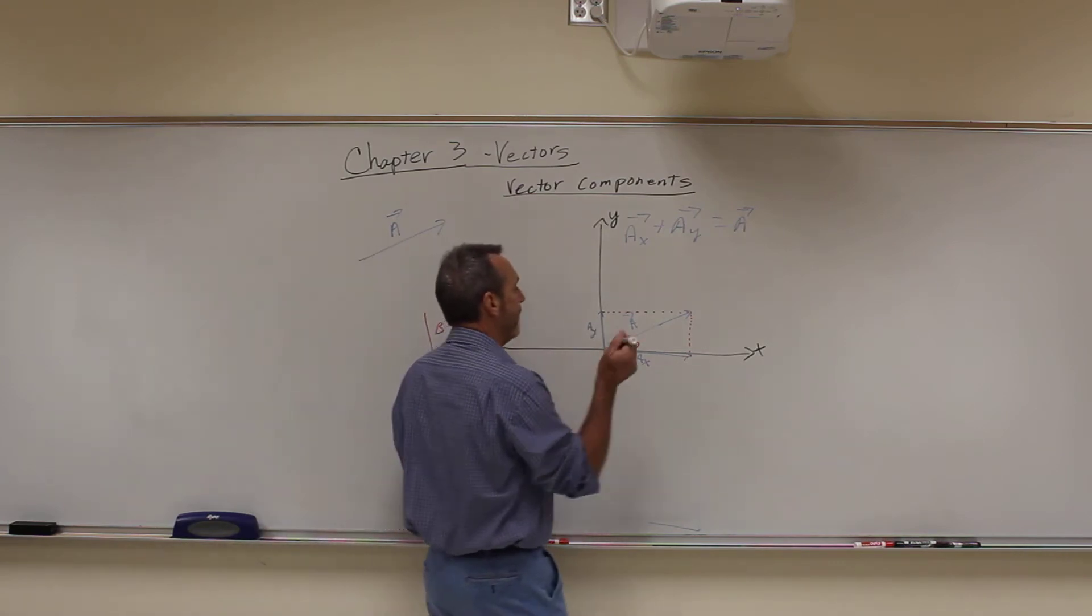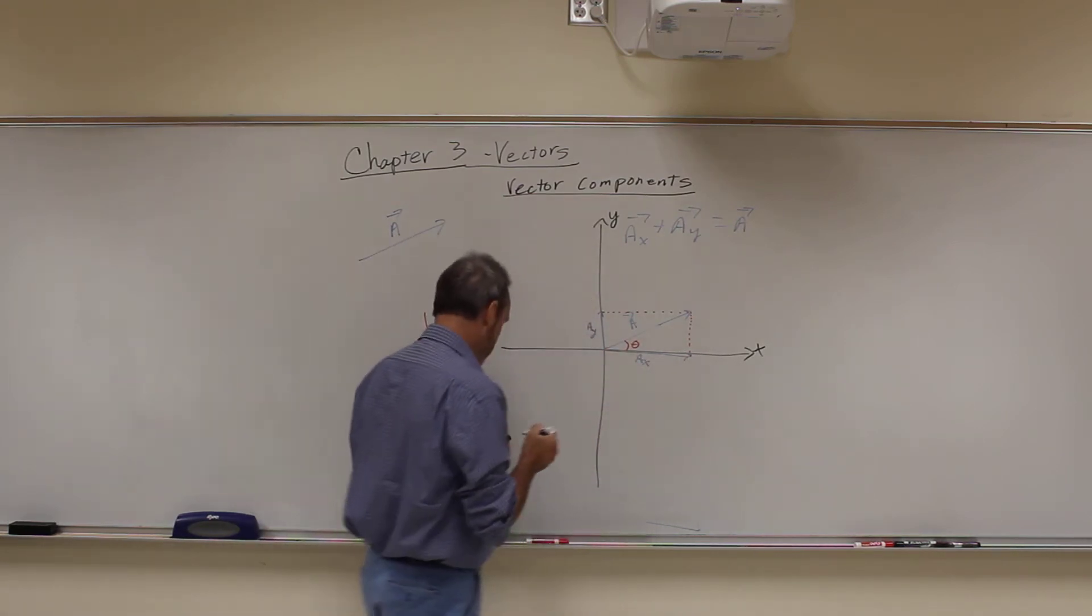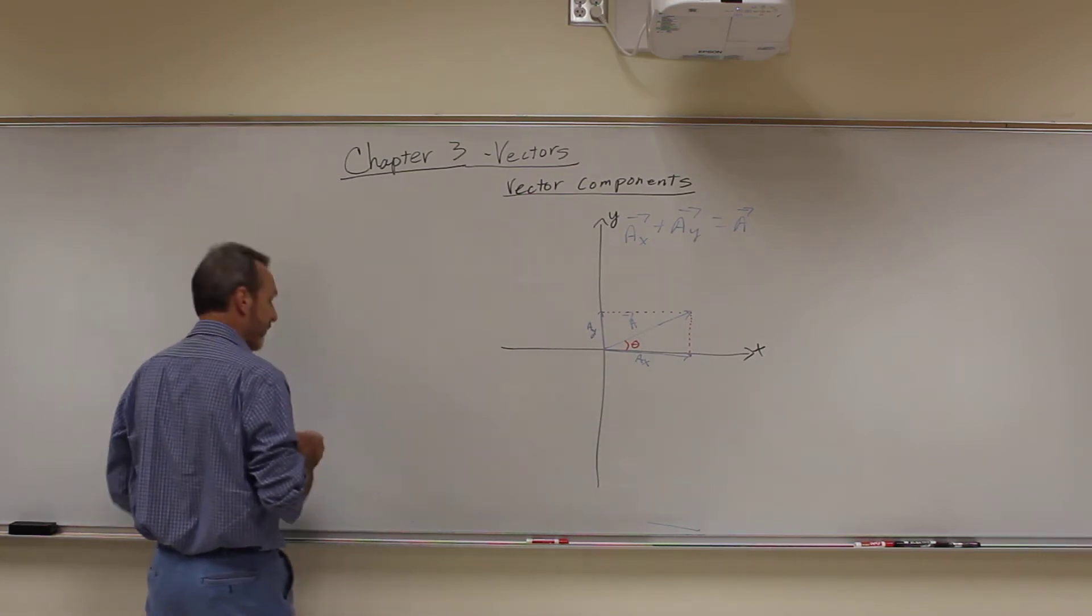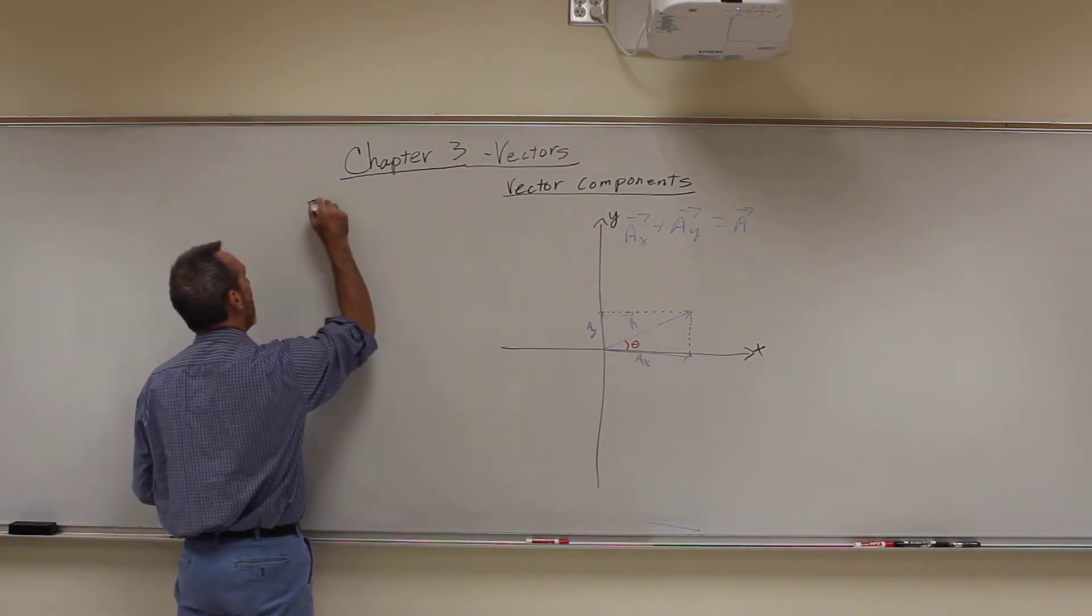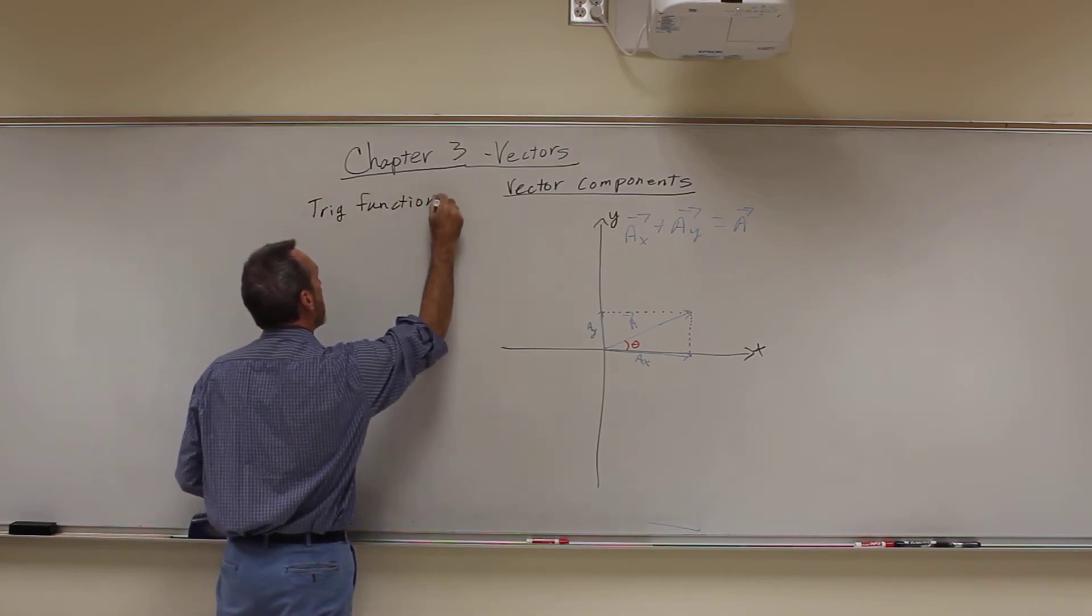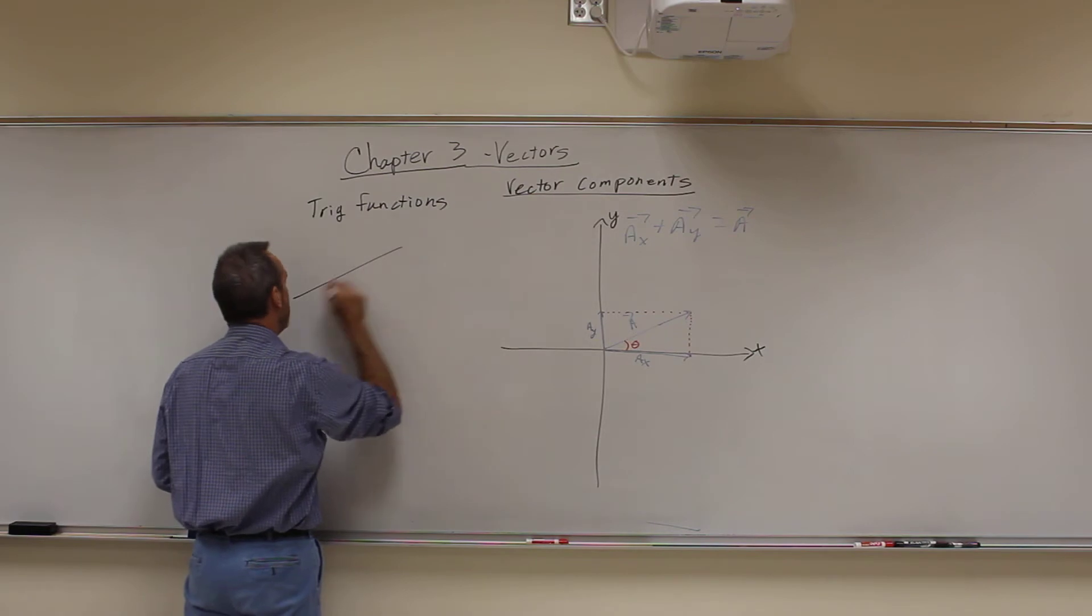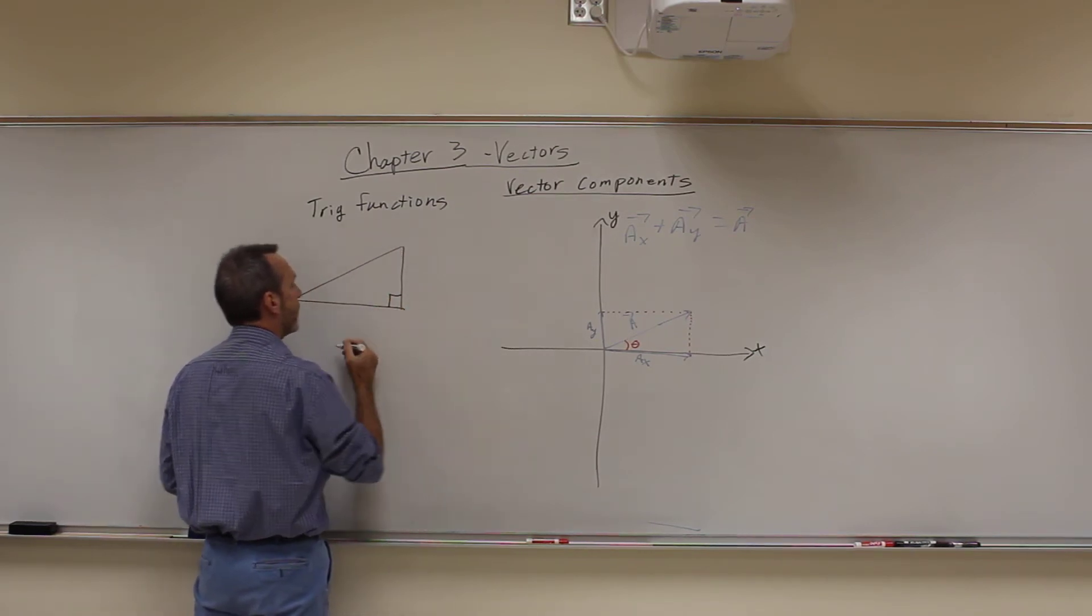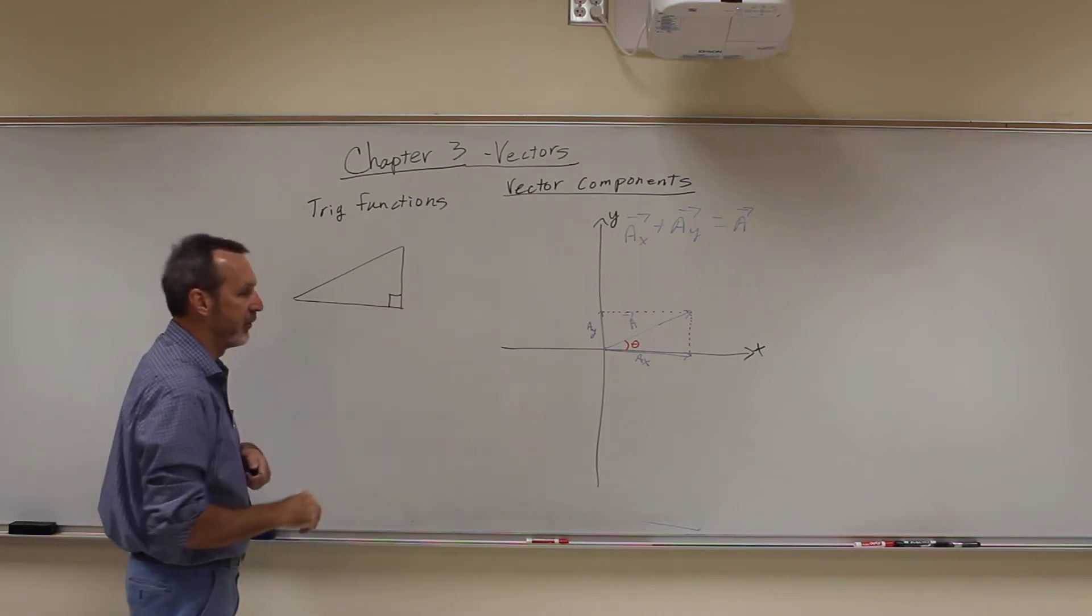Alright, so for example here then, let's do a quick review. Because you need to know your trig functions. We use them a lot. And remember a trig function just says if I have any right triangle, right triangle, so one angle is a 90 degree angle.